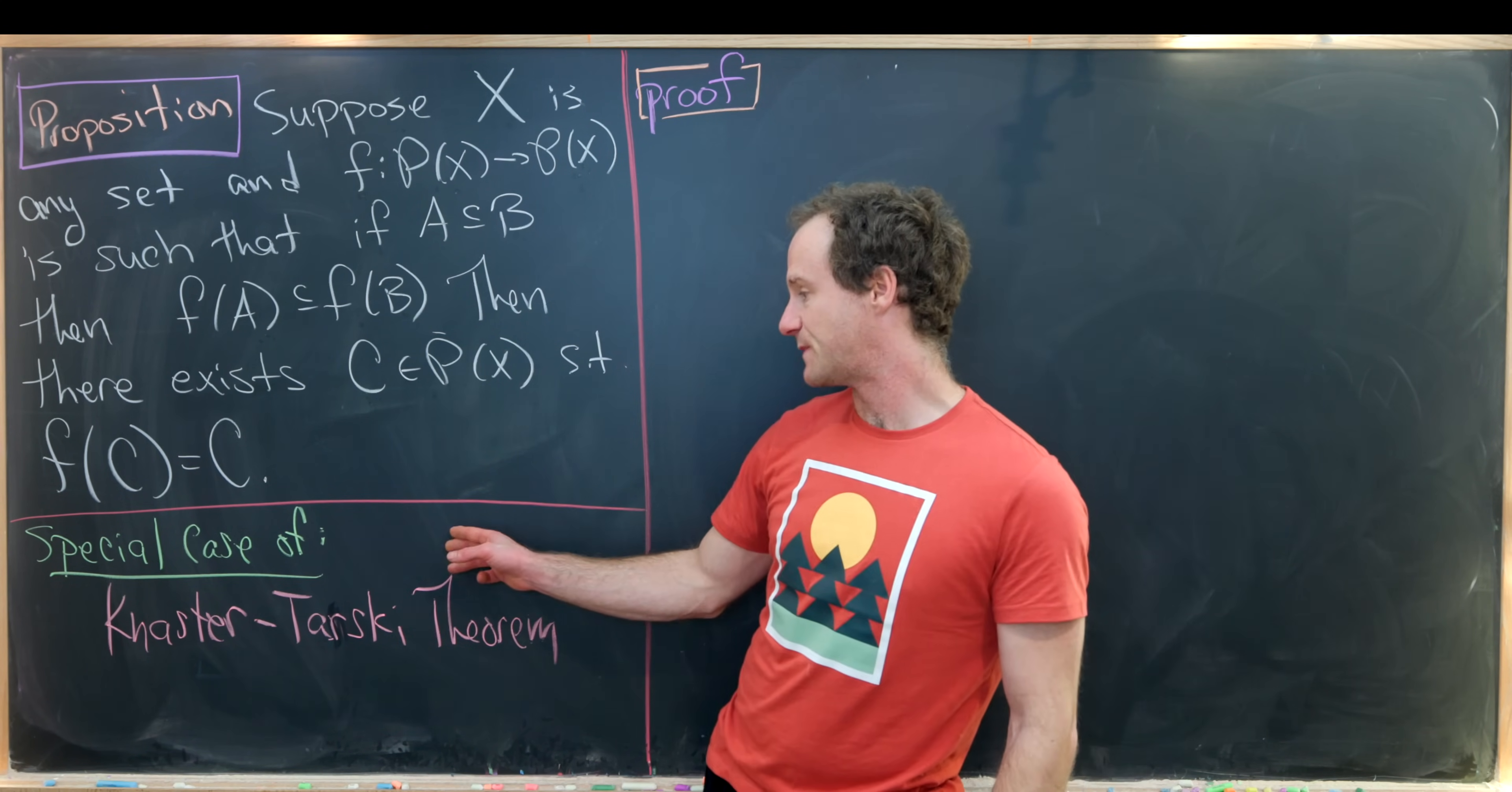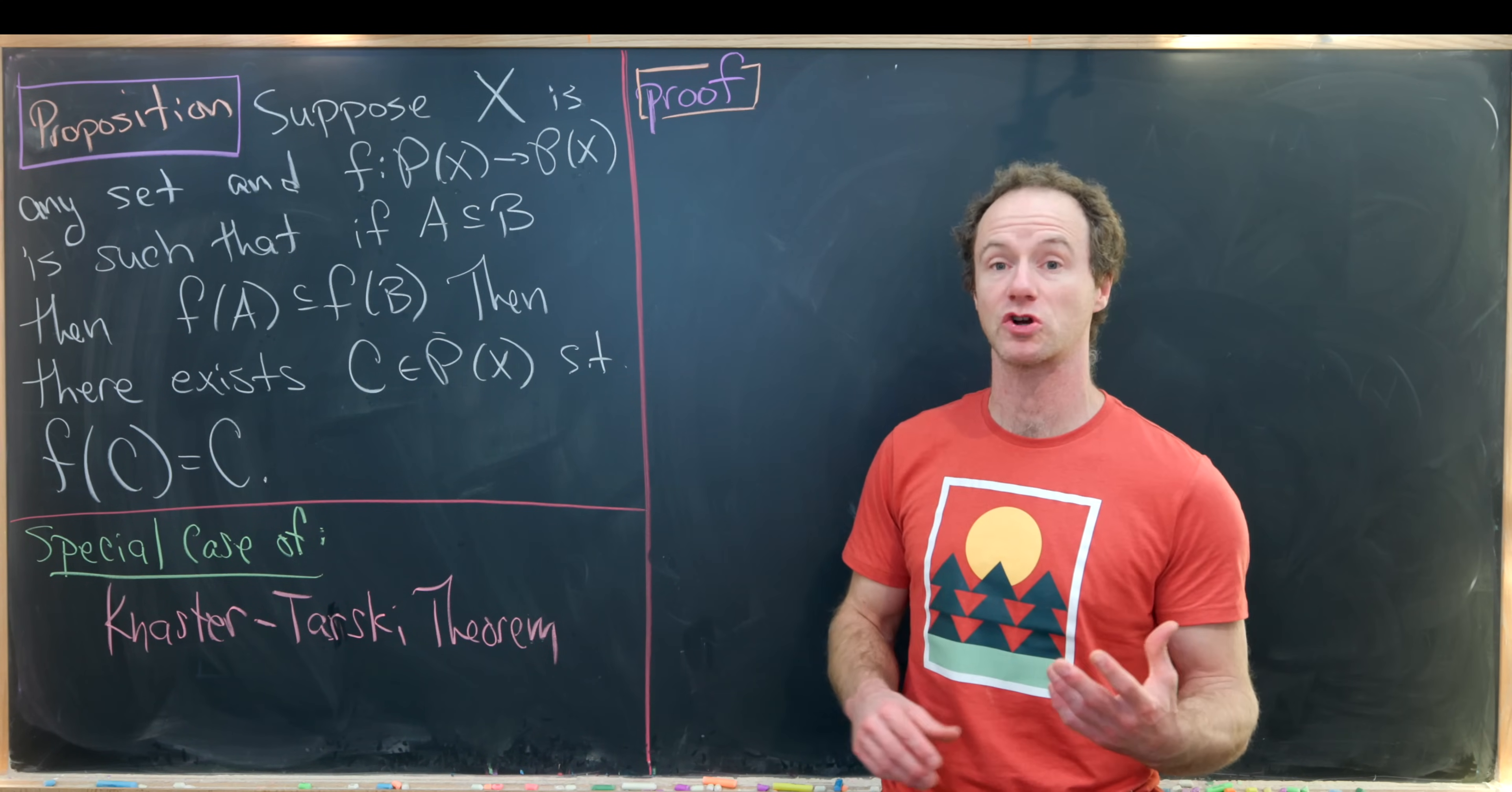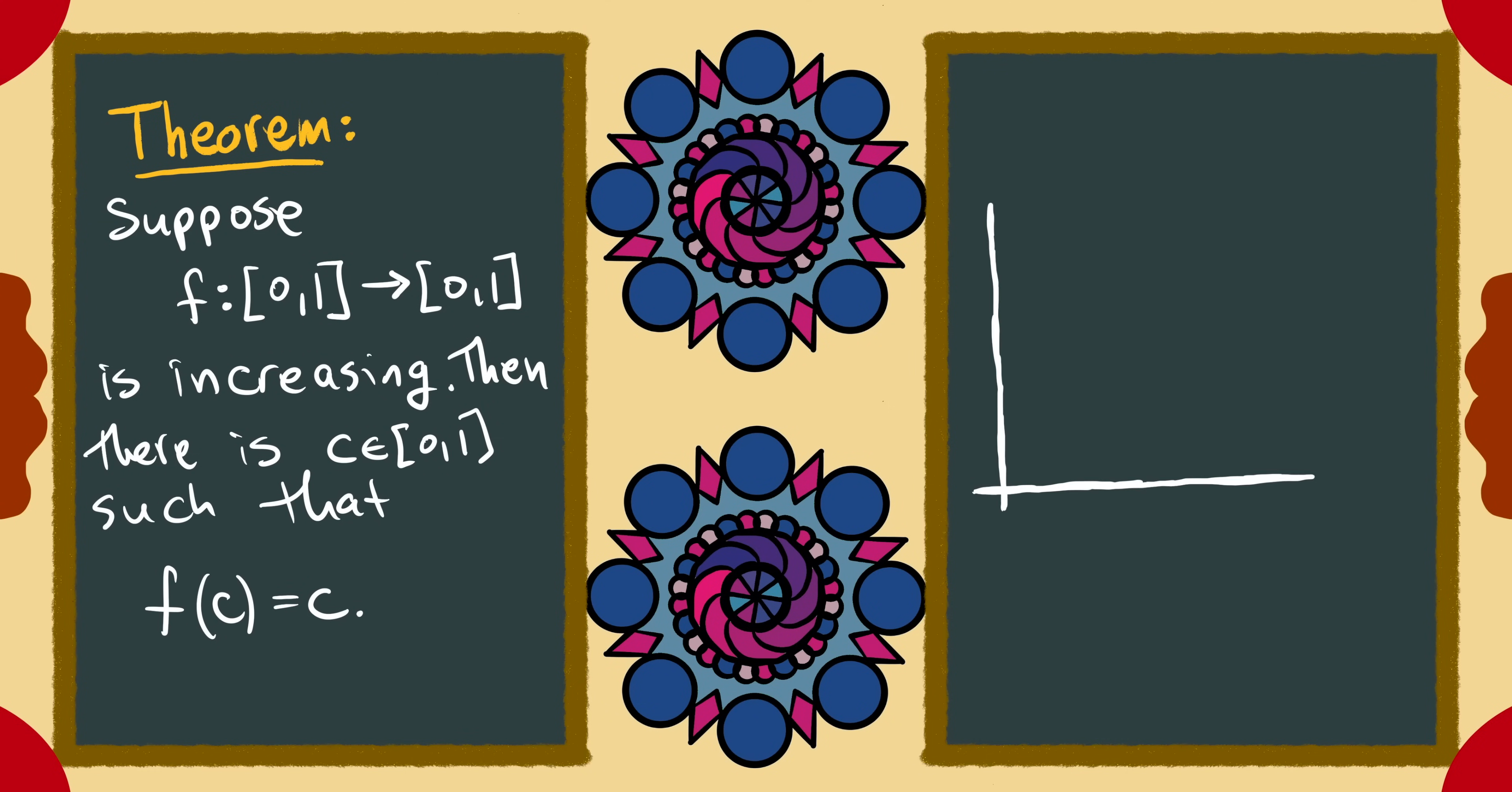So I'd like to point out that this is a special case of something called the Knaster-Tarski theorem which has to do with complete lattices, which is a type of poset or partially ordered set. Maybe the most famous version of this theorem involves increasing functions from the interval zero one into the interval zero one. And in fact any increasing function from zero one to zero one, it need not be continuous, has a fixed point.